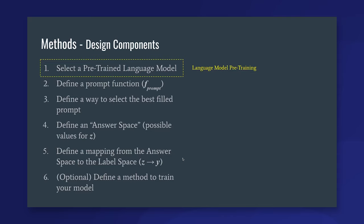These six steps can be broken down into sections from the paper. First, selection of your pre-trained language model — the biggest impact here is how the language model was pre-trained and what type of decoding that model does. Steps two and three — the prompt function and selecting the best filled prompt — can be known as prompt engineering, with a lot of different methods for investigating these open areas. Next we have answer engineering, which handles defining the answer space and defining the mapping from the answer space to the label space, encoding your label space into a model-readable format.